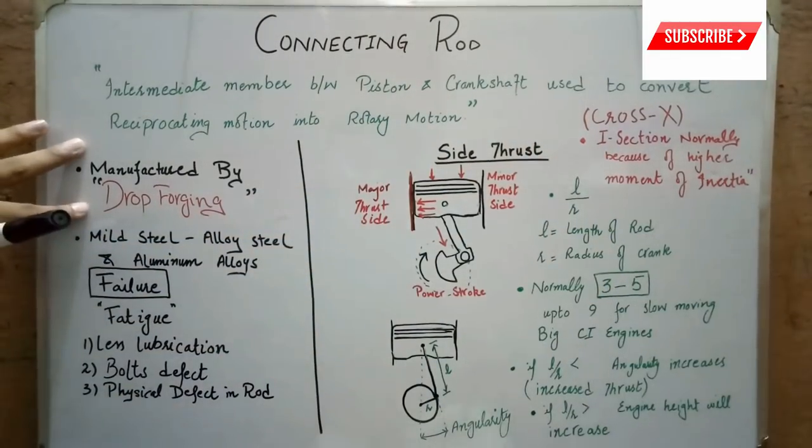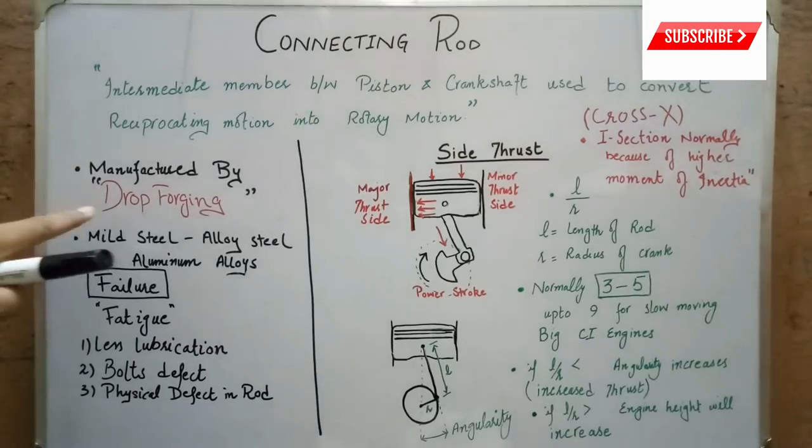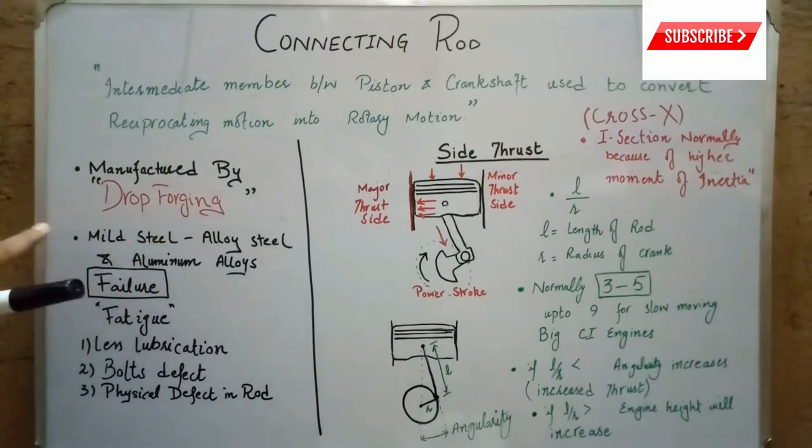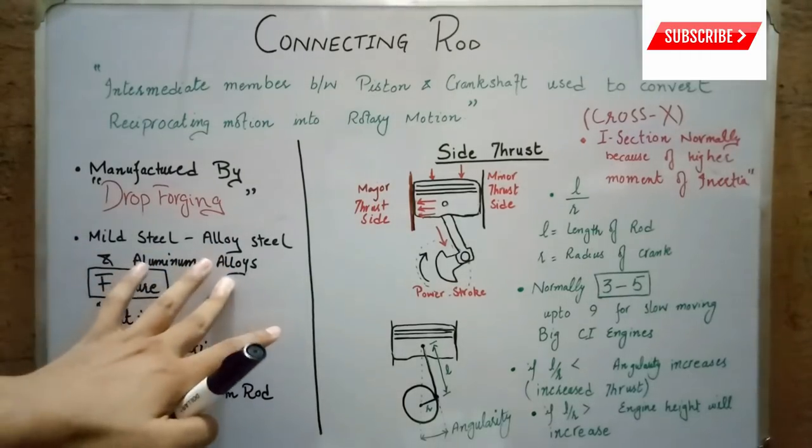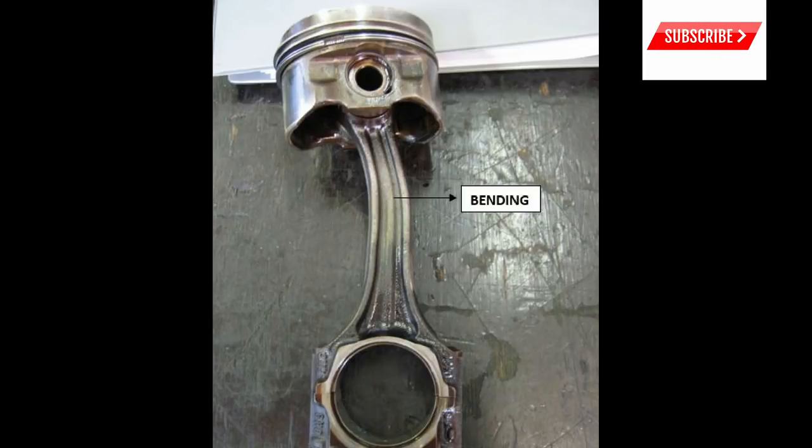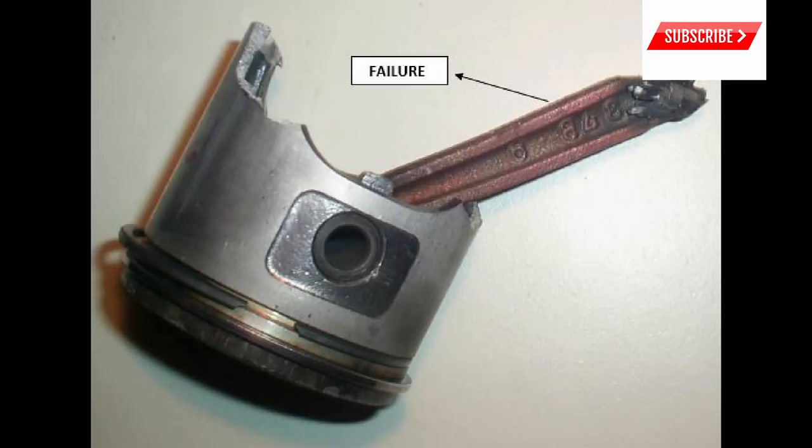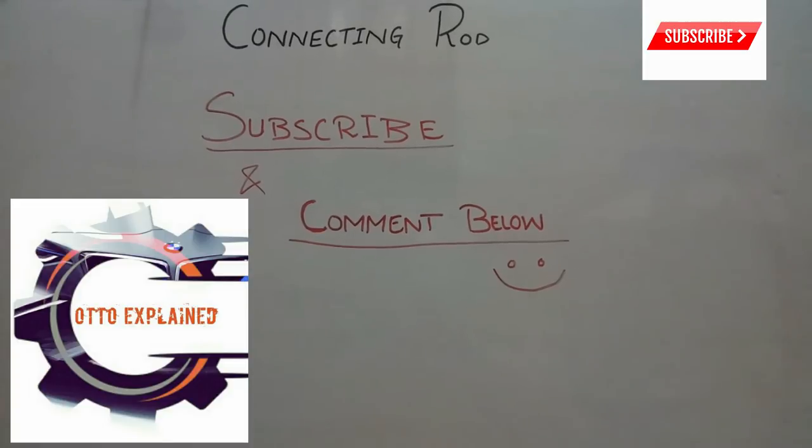As I mentioned earlier, connecting rods are made by drop forging and the materials used are mild steel, alloy steel, and aluminum alloys. That's from my side. If you have any questions, you can comment below. I'll try to answer them. Don't forget to share and subscribe. Thank you so much.